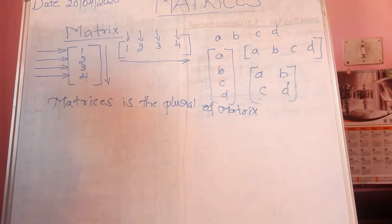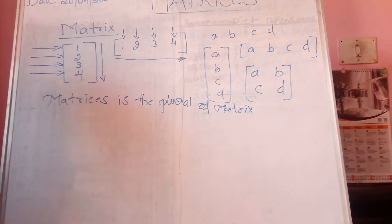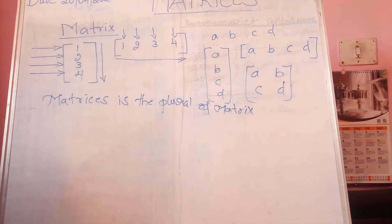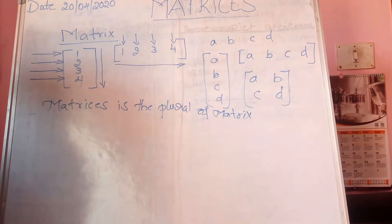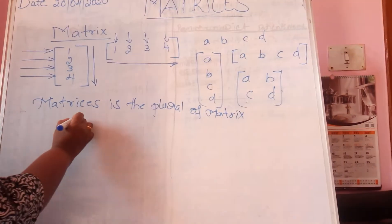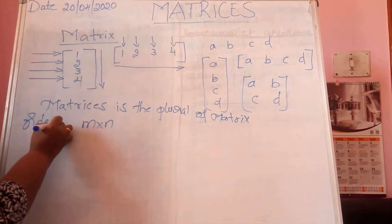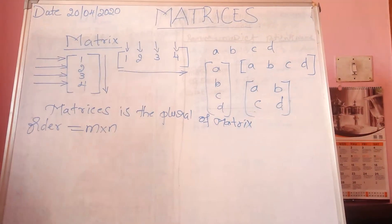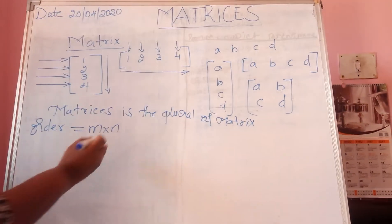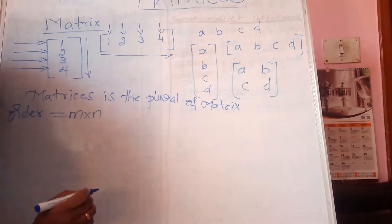Next, we are going to see the order of a matrix. The order of a matrix is always represented in the form of M into N, where M is the number of rows and N is the number of columns.